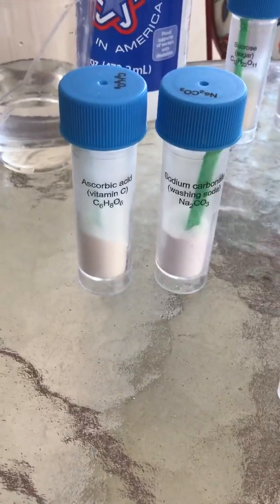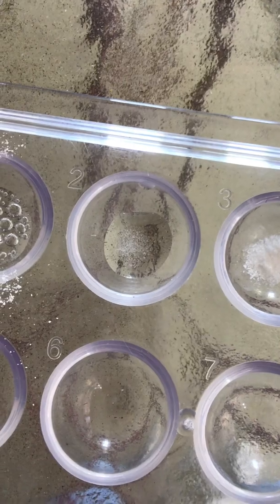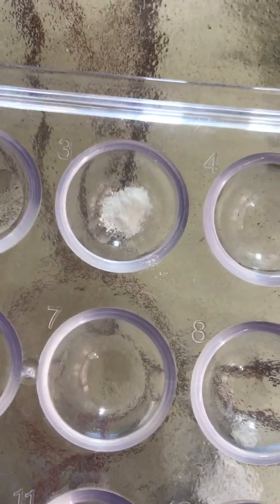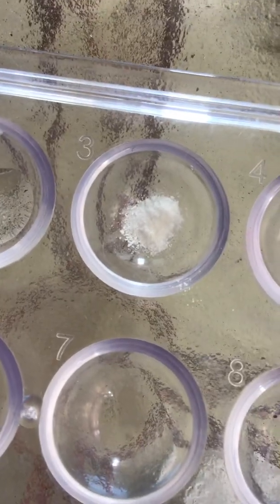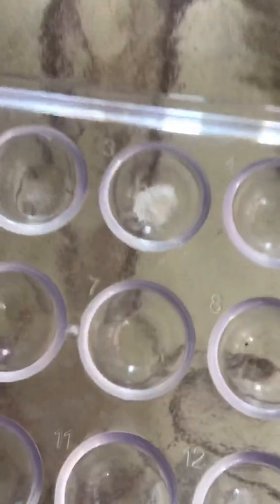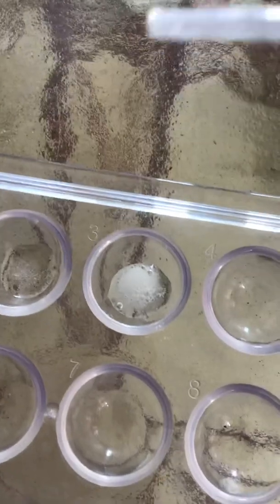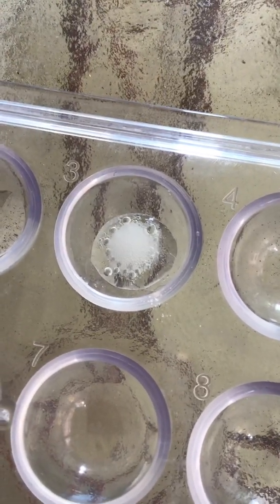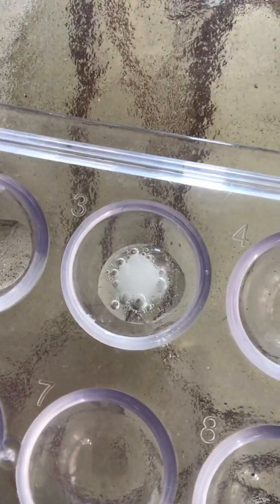Next I'm going to try ascorbic acid and sodium carbonate in well three. The citric acid and sucrose look like they're starting to dissolve or come closer together. In well three, I put in ascorbic acid and sodium carbonate. It looks kind of flaky and powdery together. Let's see what happens when I add the water. It's definitely fizzing much more. It does have bubbles, but the fizz is a lot more than what we saw in the beginning.